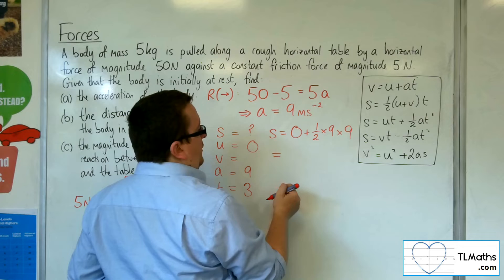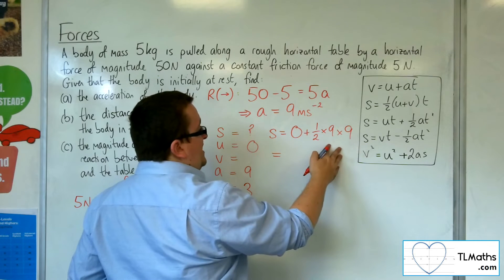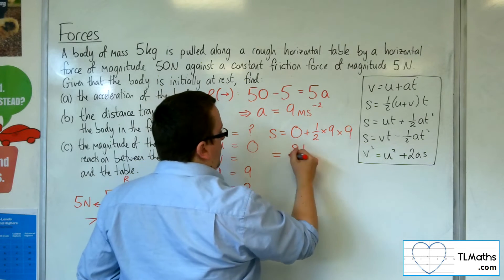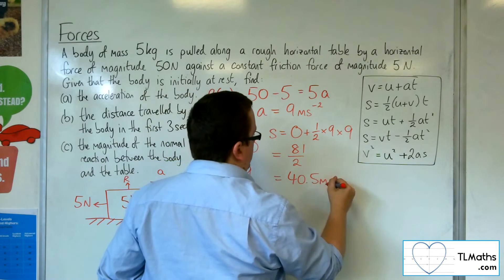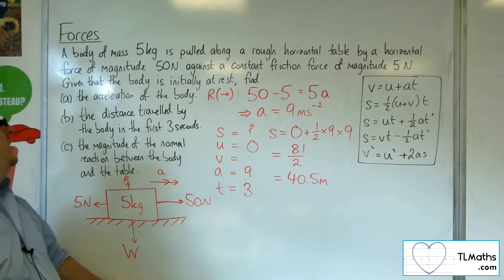So S is equal to 1 half times 9 times 9, so half of 81, so 81 over 2, which is equal to 40.5 metres. So that's how far the body travels in the first three seconds.